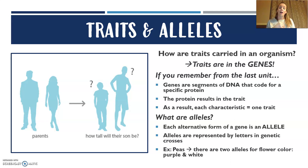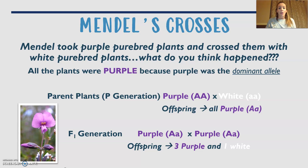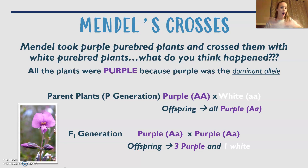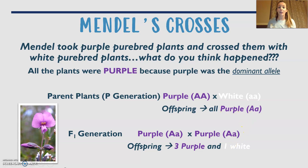In peas, for example, there are two alleles for flower color: either purple or white. When Mendel crossed purebred purple — meaning they always had purple offspring — with purebred white, he got all purple flowers, which told him that purple is the dominant allele. In that parent generation, purple crossed with white gave all heterozygous (capital A, little a) offspring. Then crossing two F1 heterozygous plants gave three purple and one white.